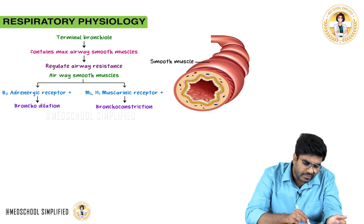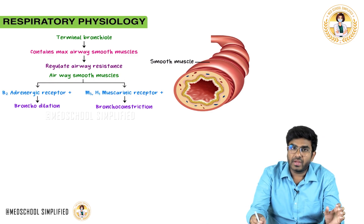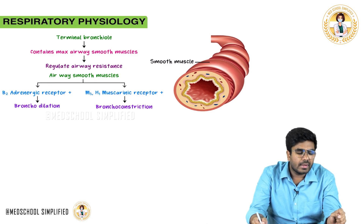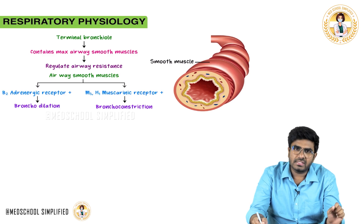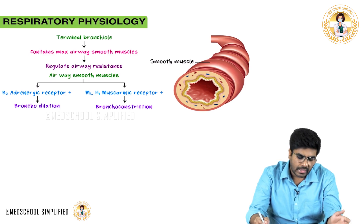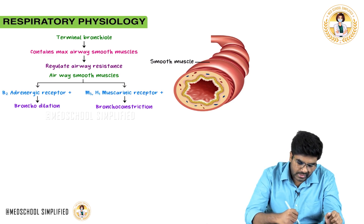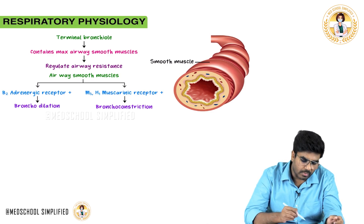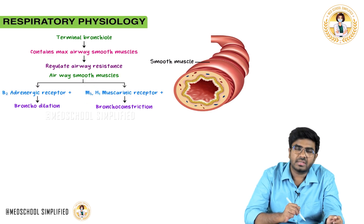For example, if the airway smooth muscles undergo contraction, there is more resistance to airflow. If they undergo relaxation, there is less resistance. On these bronchial smooth muscles, there are receptors — both sympathetic and parasympathetic receptors are present.